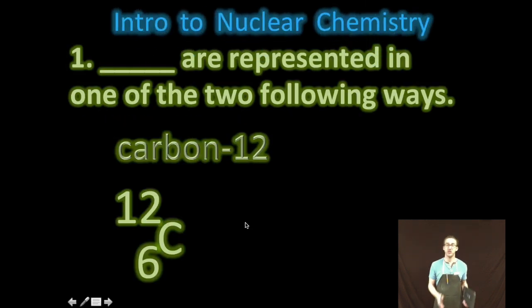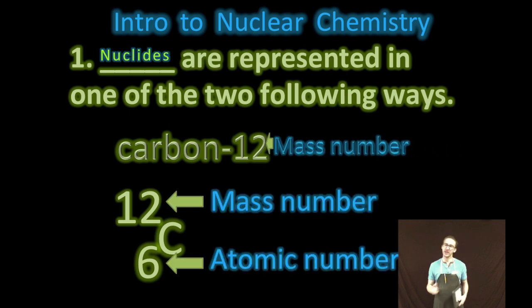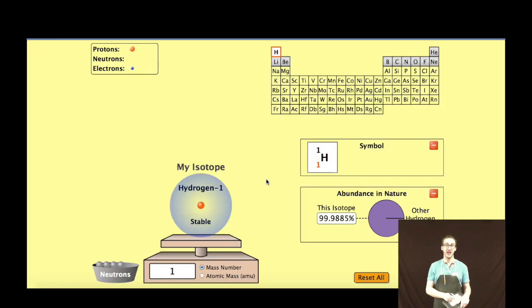Nuclides are represented in one of two following ways: first, you've got just the name of the element followed by its mass number, or you've got the symbol with the mass number and the atomic number. Take a moment to jot those down and commit them to memory. This is what you're going to see in nuclear chemistry.